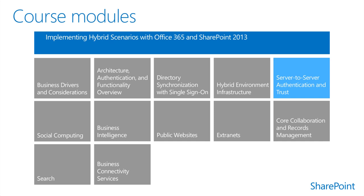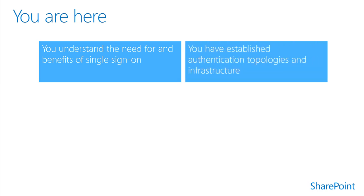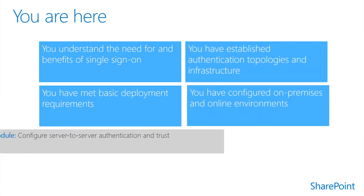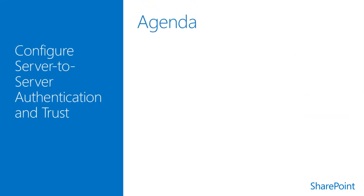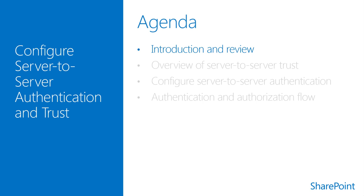The previous modules discussed the preparation of the infrastructure itself and the configuration of directory synchronization with single sign-on. The content in this module assumes you understand the need for and benefits of single sign-on, you have met the basic deployment requirements for a hybrid SharePoint environment, you have established the authentication topologies and related infrastructure, and you have configured the on-premises and online environments. This section reviews the configuration and prerequisites for infrastructure and single sign-on, gives an overview of server-to-server trust, provides steps for configuration, and finishes with a discussion of the authentication and authorization flow.